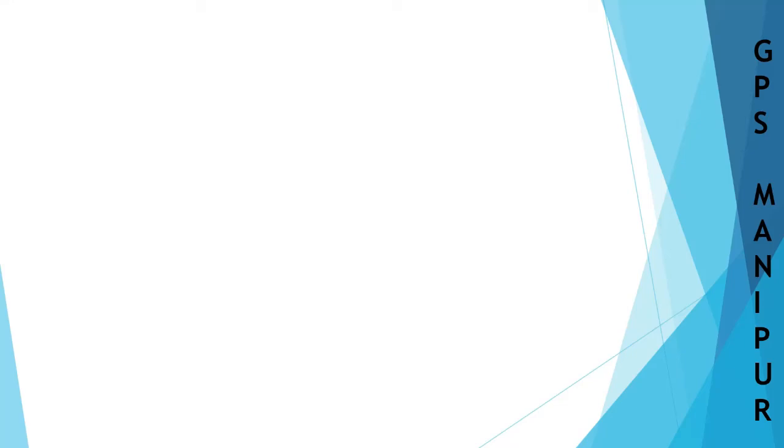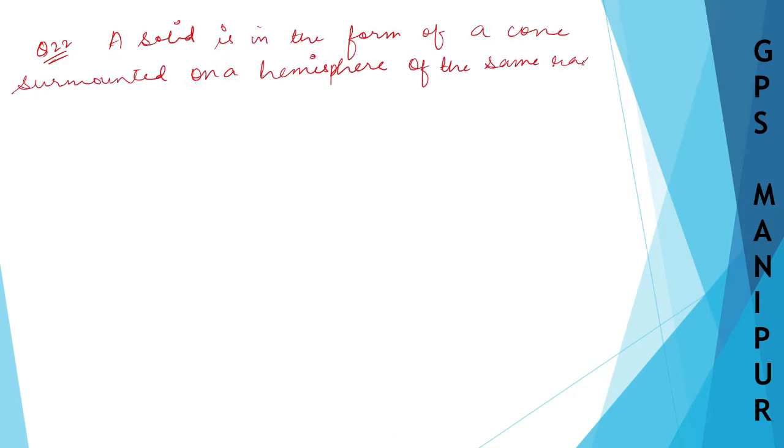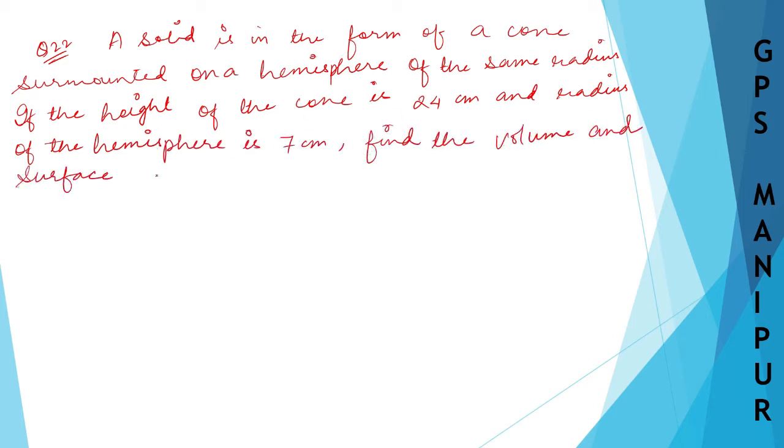Now, we are doing exercise 12.3, question number 22. Let me write down the question. The question says: a solid is in the form of a cone surmounted on a hemisphere.